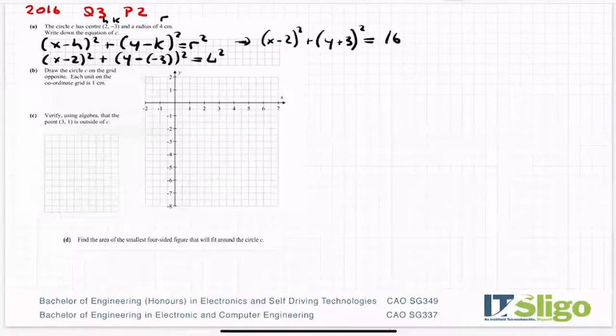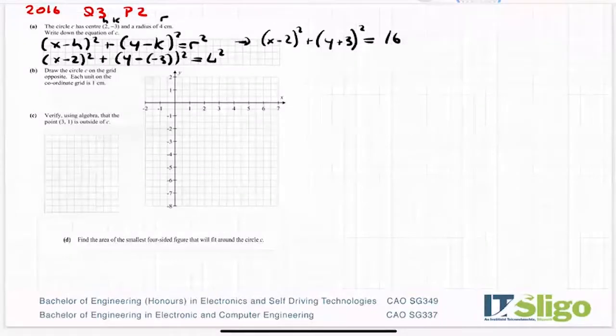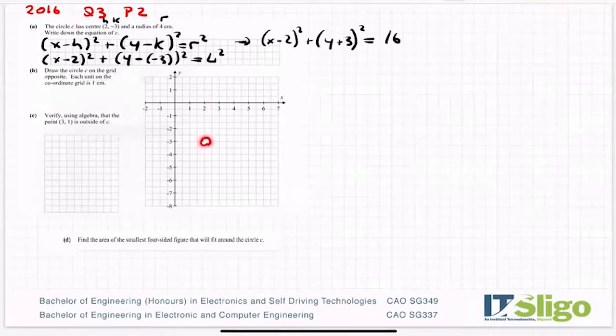Draw the equation C on the grid opposite. Each unit on the coordinate grid is one centimeter. So if I wasn't doing this online, if I was doing it on paper, I would have my compass and I would be putting the needle of my compass on the center, which is (2, -3). So 2, down to -3. So that's the center of my circle.